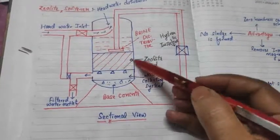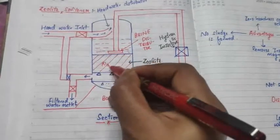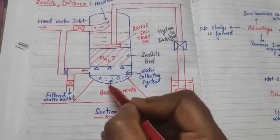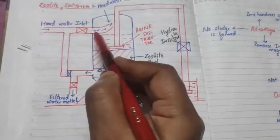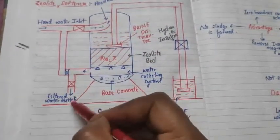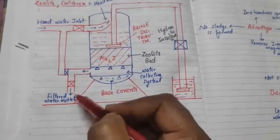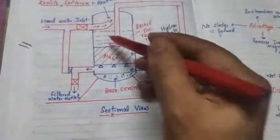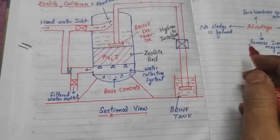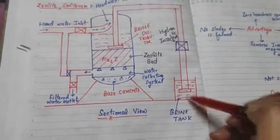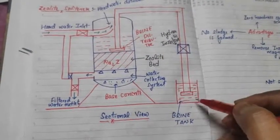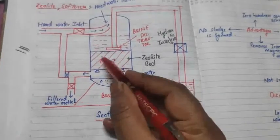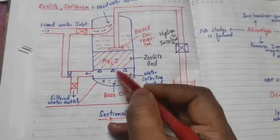Inside the softener, there is a zeolite bed (Na₂Z layer). The equipment includes a water collecting system, a concrete base, an inlet for hard water entry, a hard water distributor, and valves to control water flow.